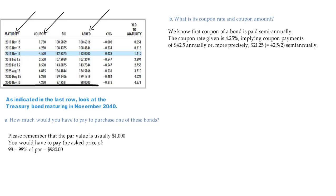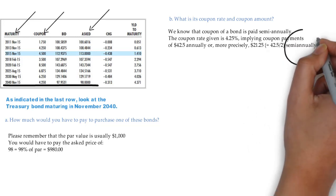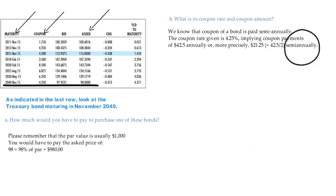more precisely, $21.25, which can be calculated by dividing 42.5 by 2. This number is the semi-annual payment.